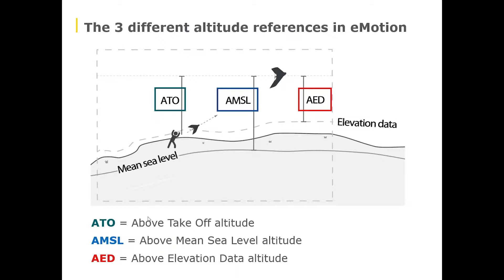ATO — probably the simplest one — stands for Above Takeoff Altitude. It refers to zero at the position where you're taking off, so where you stand and do your shake-shake; that is your zero meters. Then AMSL, Above Mean Sea Level, refers to a global geoid model — an approximation of the globe surface. In this case the model is called EGM-96, so zero would be on this geoid model representing the world.